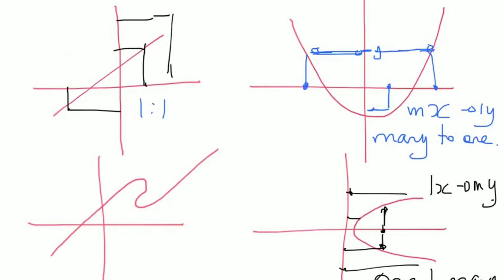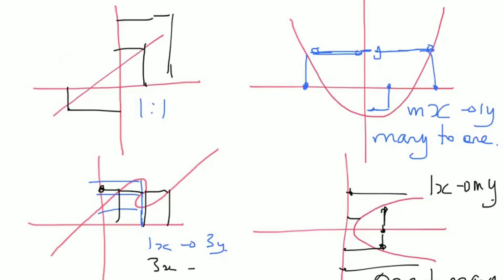Looking at the bottom-left graph, this x value generates one, two, three separate y values. But also, a particular y value here corresponds to one, two, three x values. So three x values give one y value, and one x value gives three y values. This is an example of a many-to-many graph.